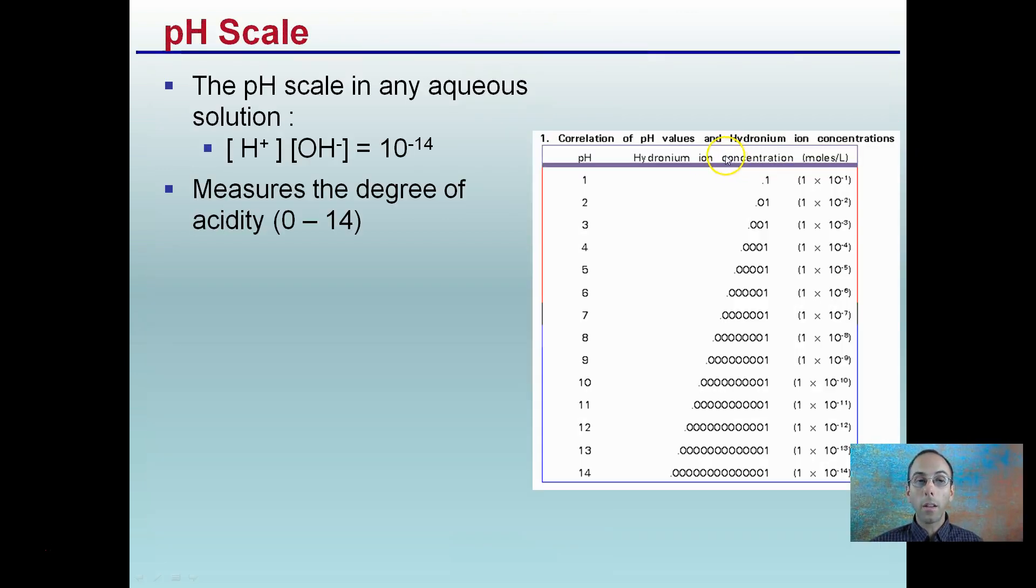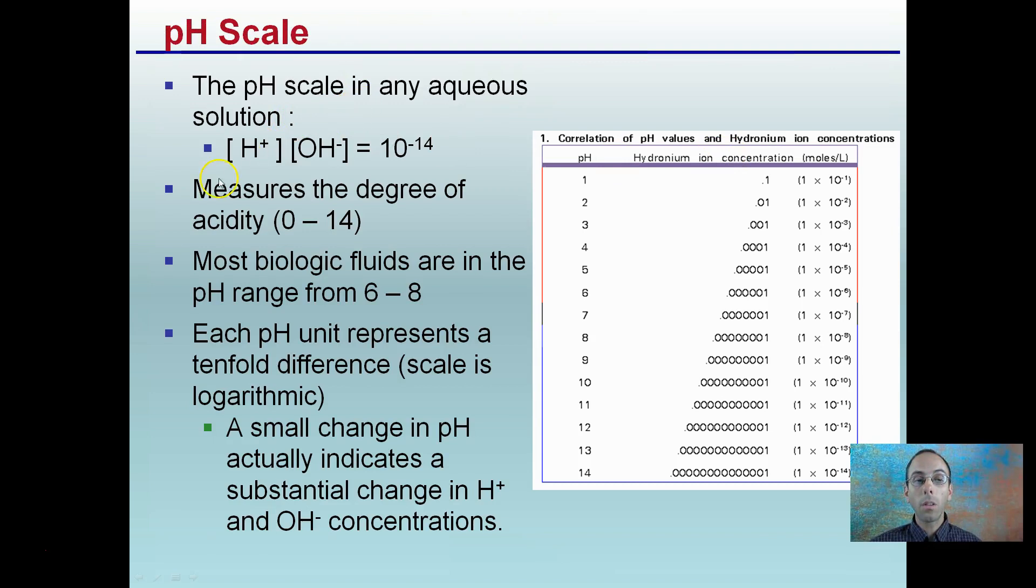Now the pH scale. The pH in an aqueous solution, the hydrogen ion concentration times the hydroxide concentration equals 10 to the minus 14. This measures the degree of acidity from 0 to 14. In relation to biology, most biological fluids are in the pH range of 6 to 8. Each pH unit represents a 10-fold difference. The scale is logarithmic. A small change in pH actually indicates a substantial change in hydrogen ion and hydroxide ion concentrations.